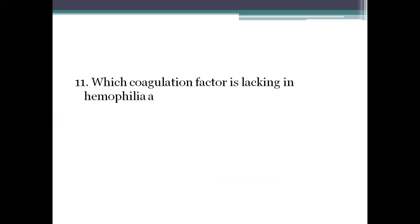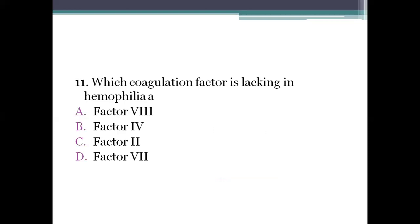Next question: which coagulation factor is lacking in hemophilia A? Option A: factor 8. Option B: factor 4. Option C: factor 2. Option D: factor 7. The right answer is option A, factor VIII. Hemophilia is a hereditary bleeding disorder caused by absence of the blood clotting factor VIII, also called anti-hemophilic factor. Factor 4 is ionized calcium, factor 2 is prothrombin, and factor 7 is stable factor or pro-convertin.